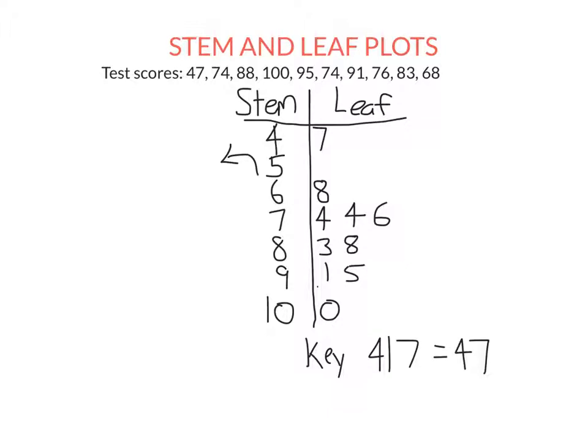Getting the median is even going to be easier because it's ordered. So there were 10 scores. So if I want to find the median, I want to find the middle of the fifth and sixth scores. So the middle occurs here between 76 and 83 because there are five scores below, five scores above.